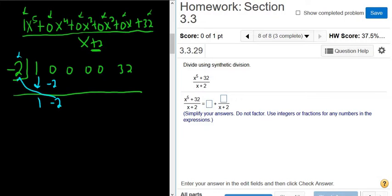Then you multiply. Negative 2 times negative 2 is 4. You add 0 plus 4, so you get 4. Then you multiply. 4 times negative 2 is negative 8. You add 0 plus negative 8, that's negative 8.